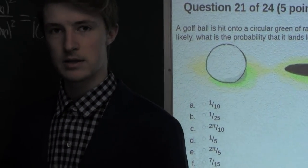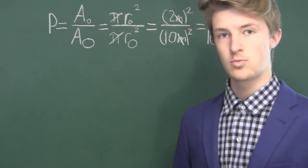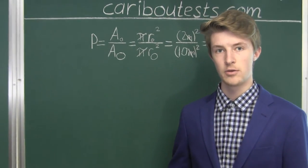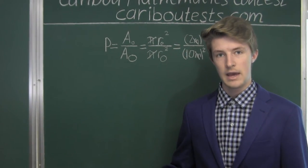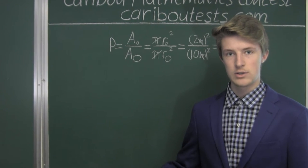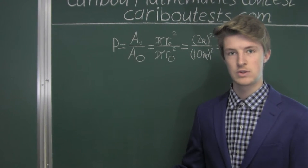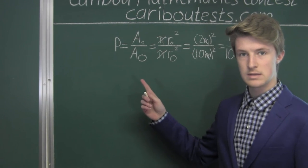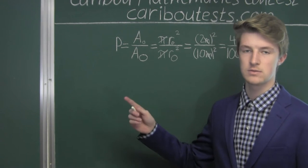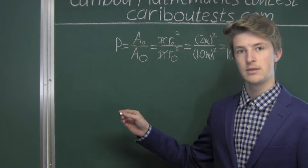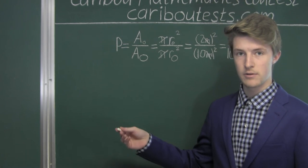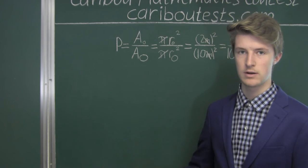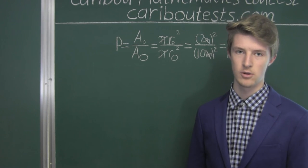Now we could have solved this problem much quicker by realizing that both of these shapes are similar, as they are both circles, and that the area is scaled quadratically, since it has two dimensions, and therefore in our case, when one radius is 5 times greater than the other, so 10 meters divided by 2 meters, then its area, the area of the larger circle, is 5 squared, which is 25 times greater than the area of the smaller circle.